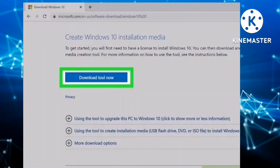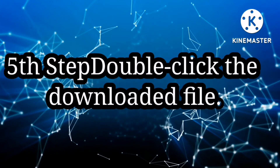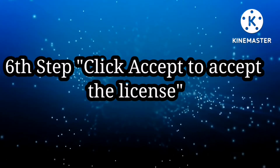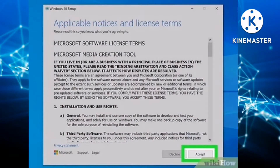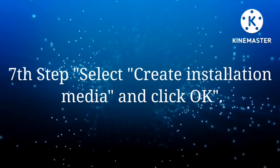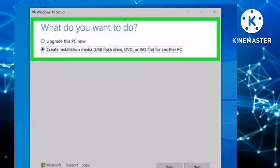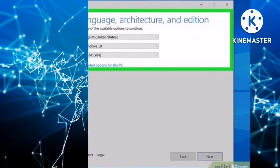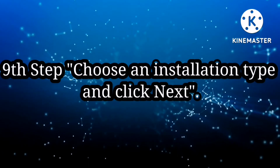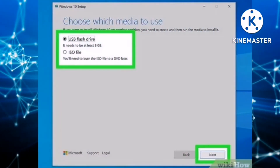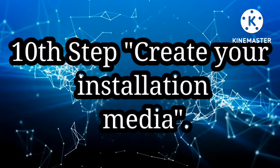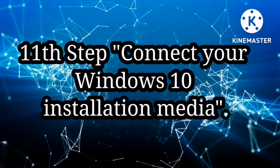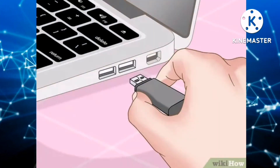Fourth is to click the tool. Then double click the downloaded file. Click accept to accept the license. Then select 'Create installation media' and click when asked what do you want to do. Select your preferences and click next. Choose an installation type and click next. Then create your installation media and disconnect your Windows 10 installation media.